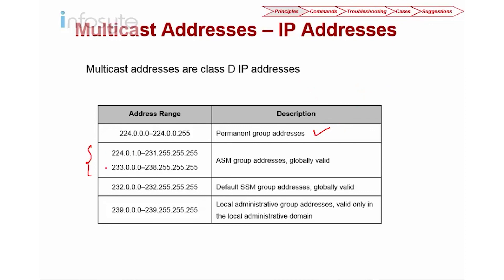We also have the range 224.0.1.0 to 231.255.255.255 and 233.0.0.0 to 238.255.255.255, which are for Any Source Multicast groups and are globally valid. For SSM, there is a specific range as well. The range 239.0.0.0 to 239.255.255.255 is considered private address space, used for local administrative purposes — these are the private addresses in multicast.